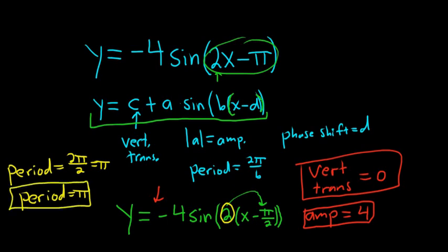Good stuff. And what else? The phase shift, right? The phase shift. That's our little d. And where is little d? It's right here. Here's our little d π over 2. So the phase shift is π over 2.